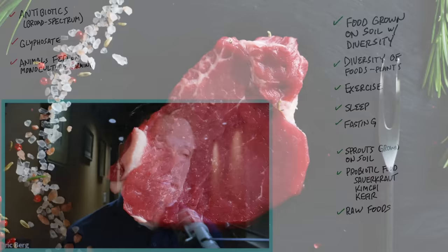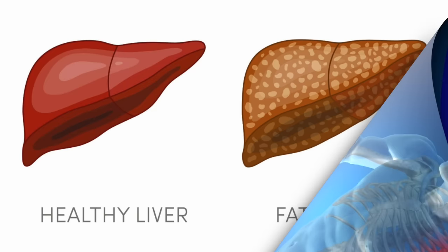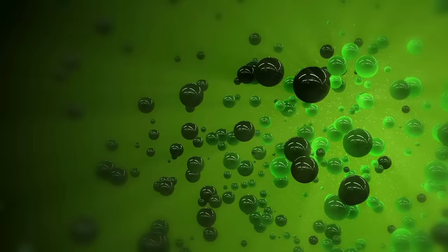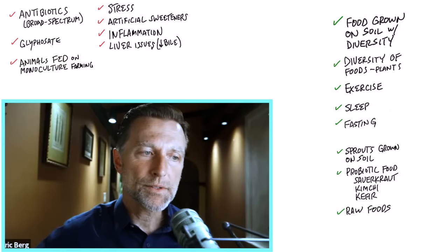Other things that lower diversity include stress, artificial sweeteners, inflammation, and a fatty liver. Any liver problem can cause issues because the liver makes bile, and without adequate quantities of bile, we get an imbalance in our microbes — dysbiosis. Bile is actually made by your microbes, but it also controls the ratios of certain microbes, so we need a healthy liver to maintain this diversity.